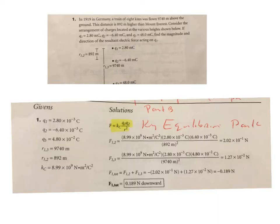Let's look at a few examples of our superposition problems. Number one on your assignment. In 1919, in Germany, a train of eight kites was flown 9,740 meters above the ground. The distance is 892 meters higher than Mount Everest. Consider the arrangement of the charges located at the various heights and shown below. If Q1 is 2.8, Q2 is negative 6.4, and Q3 is 4.8. Find the magnitude and the direction of the resultant electrical forces acting on Q. So this has got it drawn out for us, showing us Q1, Q2, Q3.